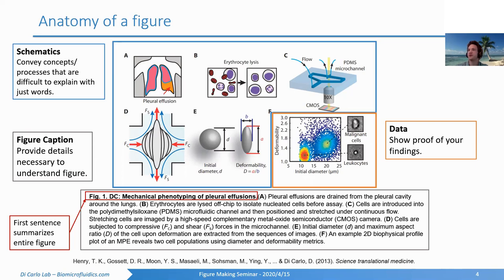For example, in this figure, they're talking about using a microfluidic chip to look at the deformity of cells taken from patients, and seeing if how these cells deform and flow correlates to whether they're cancerous or not.